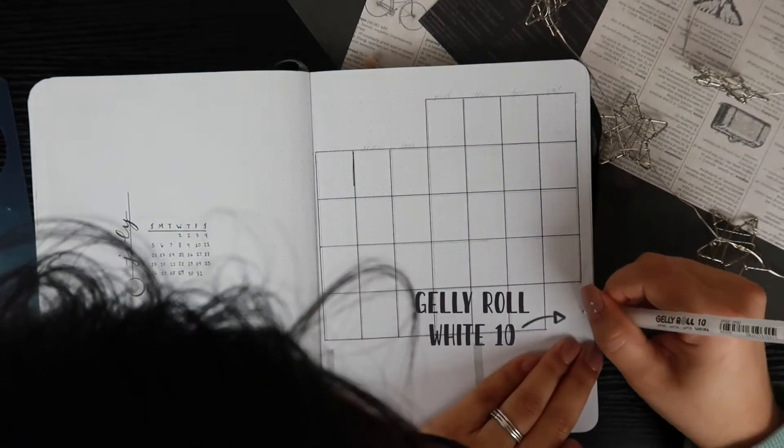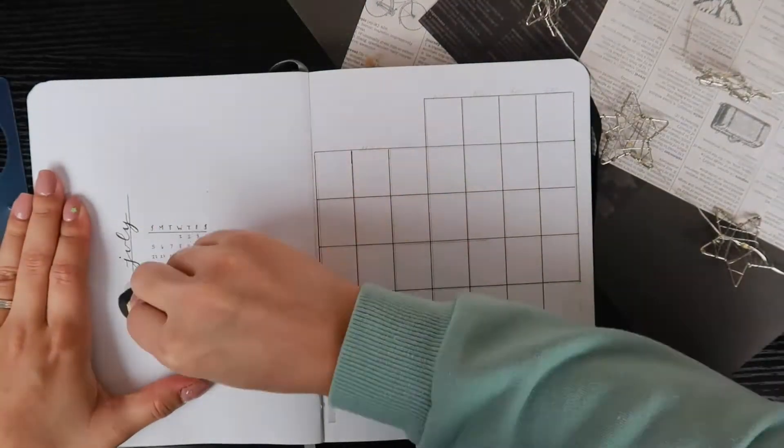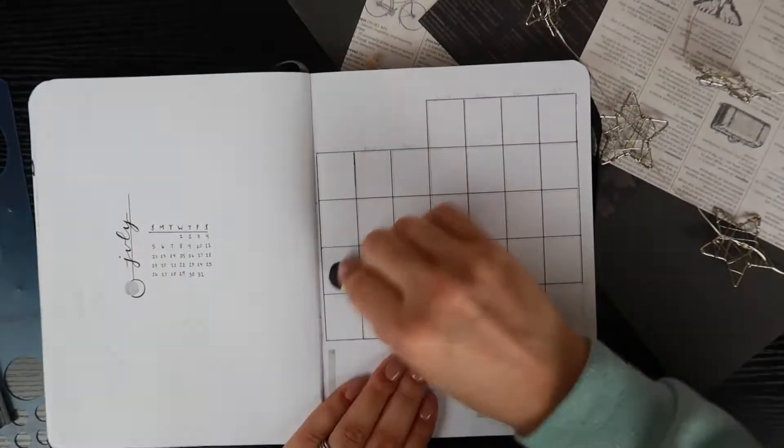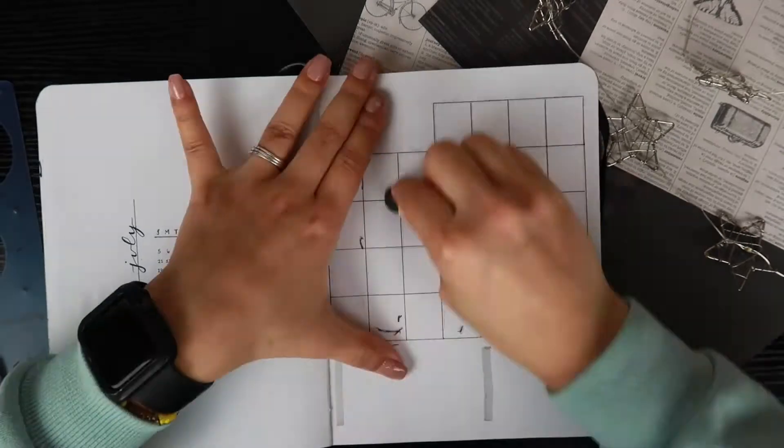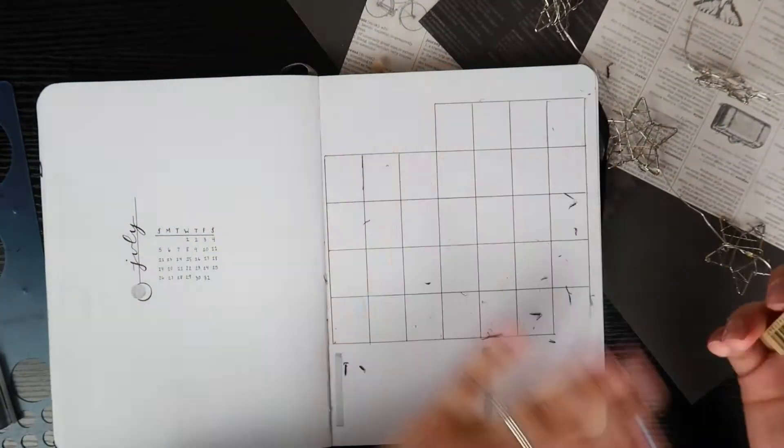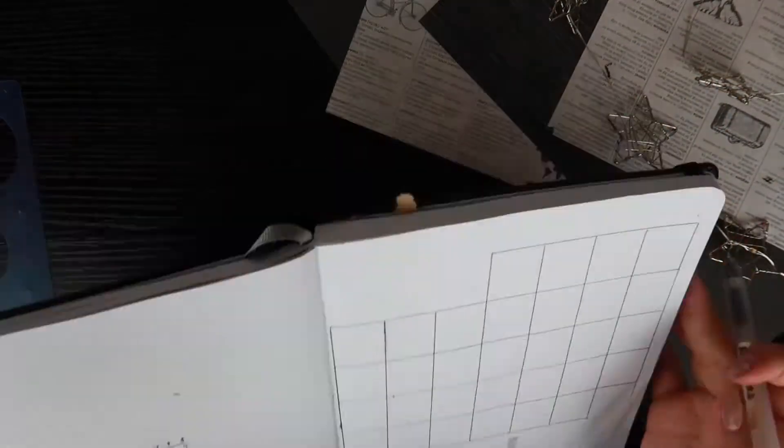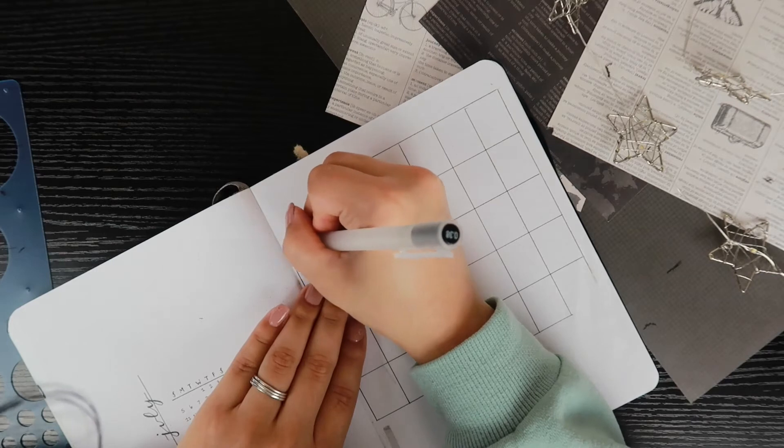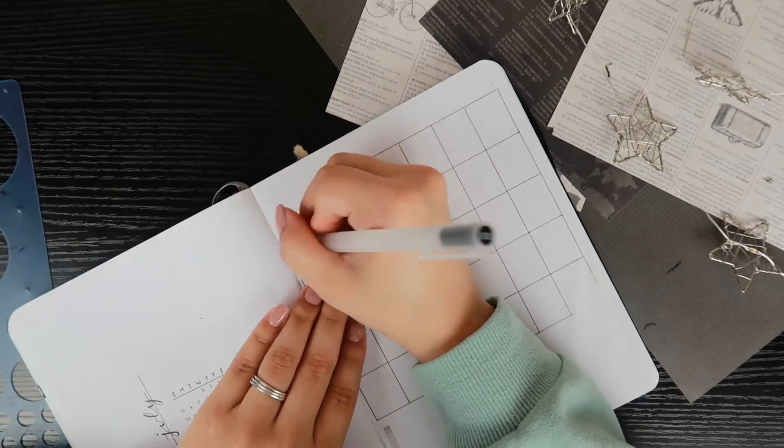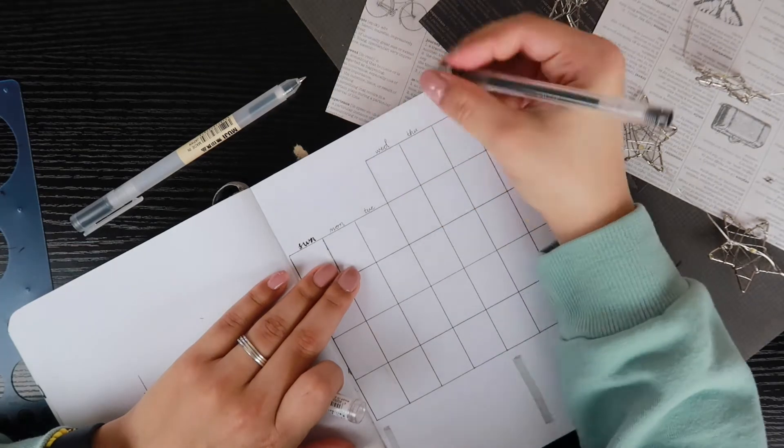I messed up a little, so I'm using a jelly white roll, although later I go in with some actual white-out because the jelly white roll was too sheer. Then I first started going with the Muji pen but didn't like the thickness, so I went back with a 0.25 millimeter pen and wrote down the days of the week.